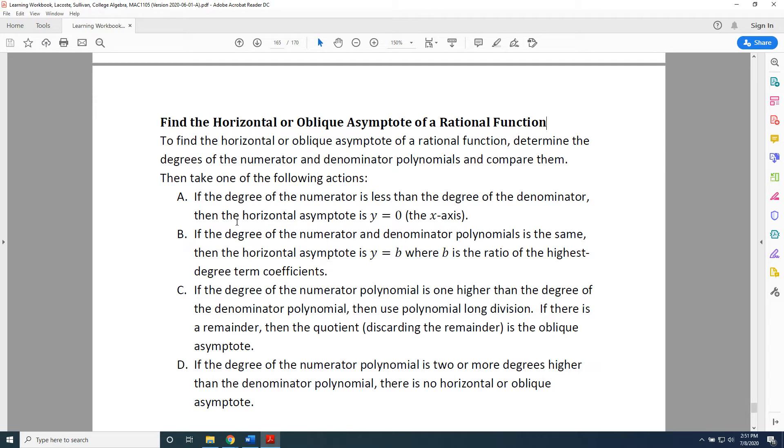Action A: If the degree of the numerator is less than the degree of the denominator, then there will be a horizontal asymptote, and its equation is y equals 0, also known as the x-axis.